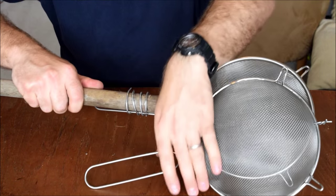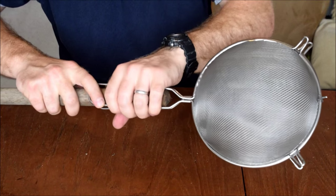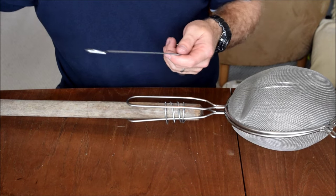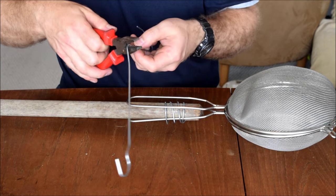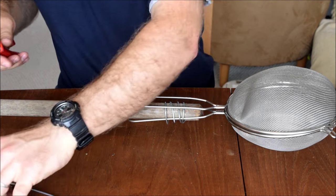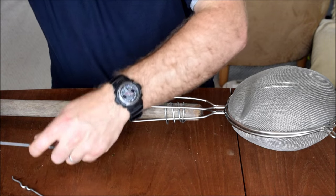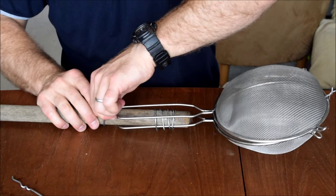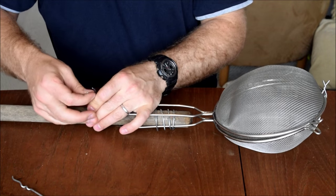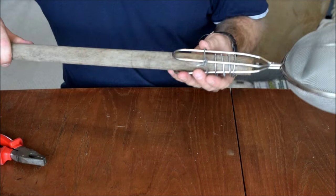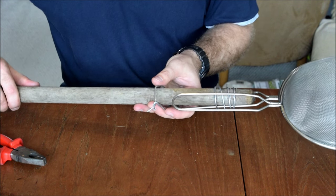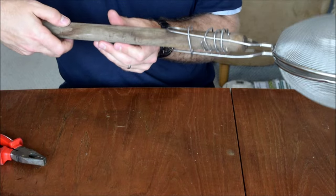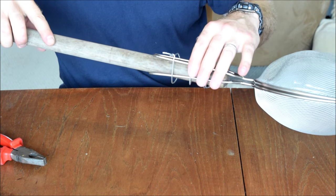So the final step is to make a catch to hold the second sieve closed while you're cooking the popcorn. To do that, I'm just going to use another length of wire from the coat hanger. And I'm just going to wrap it round and make a single loop. So after a bit of reshaping that loop will now slide over the two handles, and that way it will hold the sieves together while you're cooking.